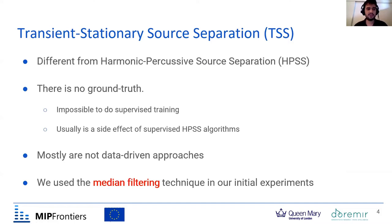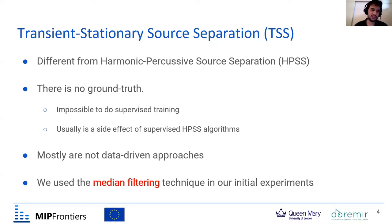It's also important to say that transient-stationary source separation is not the same as harmonic-percussive source separation. They're similar, but harmonic-percussive source separation tries to separate harmonic and percussive instruments, while transient-stationary separation extracts all the transient parts from the stationary. There's no ground truth, so it's impossible to do supervised training with transient-stationary source separation.